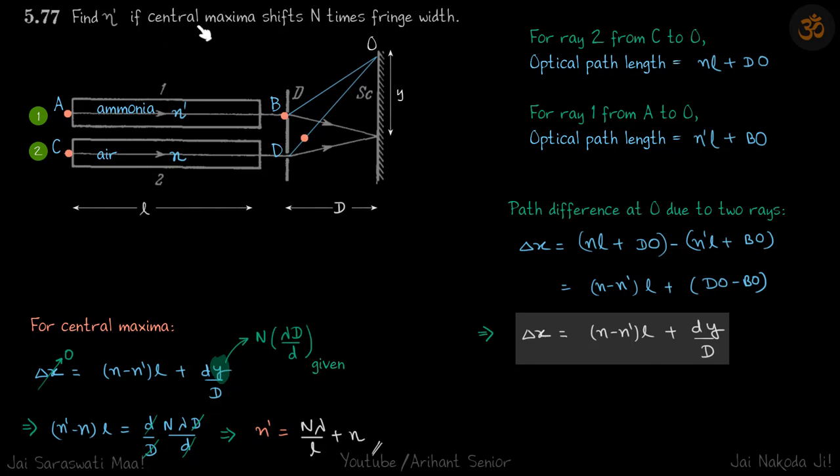Find n' if central maxima shifts n times fringe width. I just simplified the problem statement here because I was lacking some space.